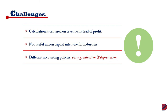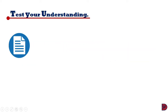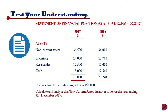Let's test understanding with a practical example. We are looking at an extract of a statement of financial position as at 31st December 2017, showing assets for both years — non-current assets, inventory, receivables, and cash. The revenue for the period ending 2017 is 53,000. You are required to calculate and analyze the non-current asset turnover ratio for the year ending 31st December 2017.